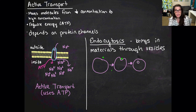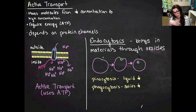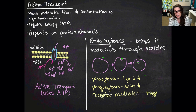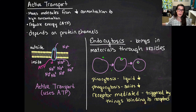There are three types of endocytosis. The first is pinocytosis, which brings liquids into the cell. The second is phagocytosis, which brings solids into the cell. The third is receptor-mediated endocytosis, where a receptor on the outside of the cell membrane binds a chemical signal, triggering the cell membrane to engulf and bring material into the cell.